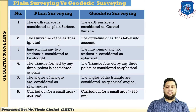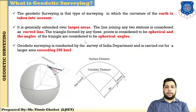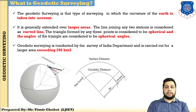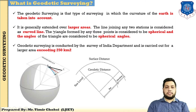After understanding the difference between plane survey and geodetic survey, let me explain in detail what is a geodetic survey. Geodetic survey is that type of survey in which the curvature of the earth is taken into account. It is generally extended over a larger area, and the line joining any two stations is considered as a curve line.